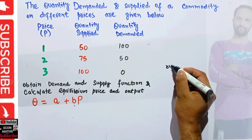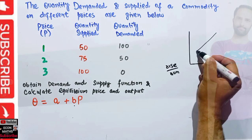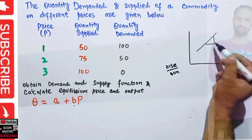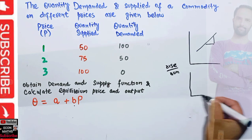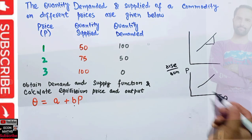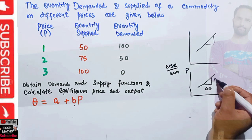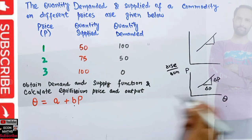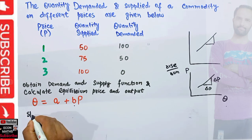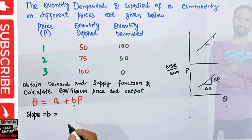Slope is actually rise over run, meaning if we have a graph, slope is the vertical distance upon horizontal distance. But since we are taking quantity on the horizontal axis and price on the vertical axis, slope denotes the change in quantity upon change in price. So slope, which is B, is simply equal to change in quantity upon change in price.